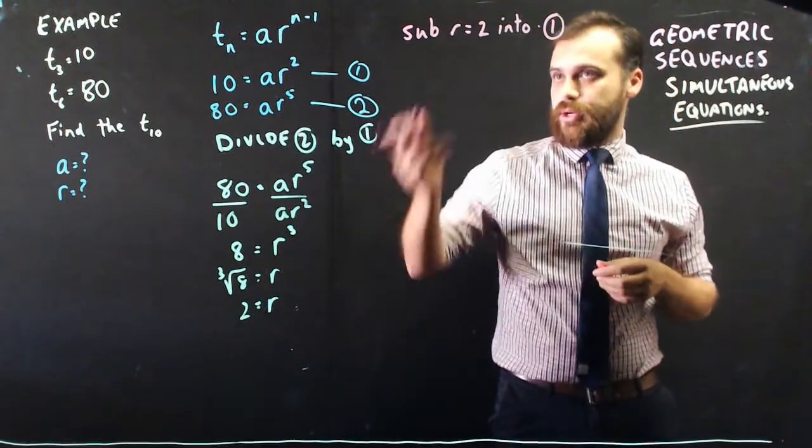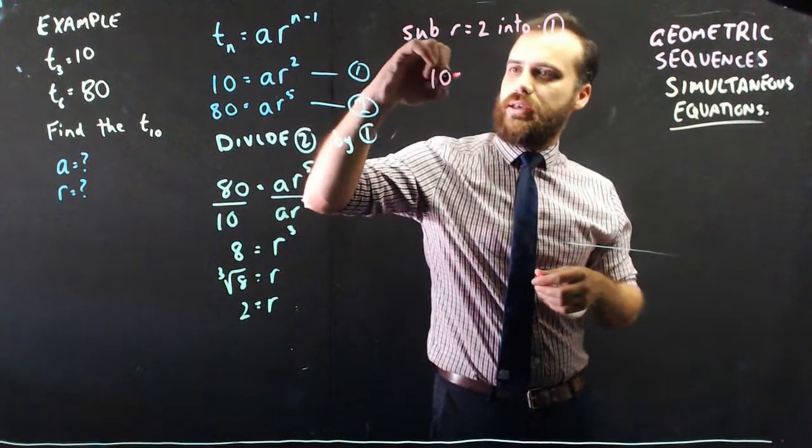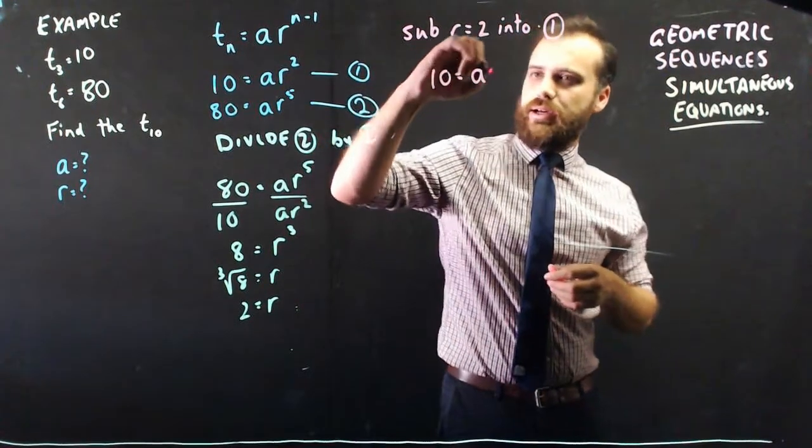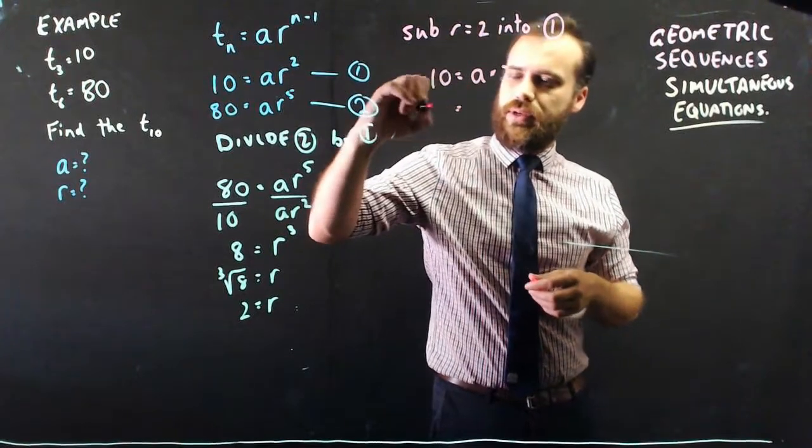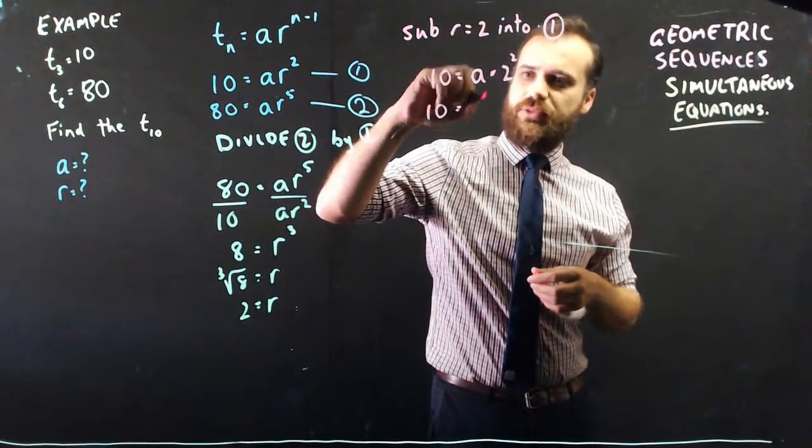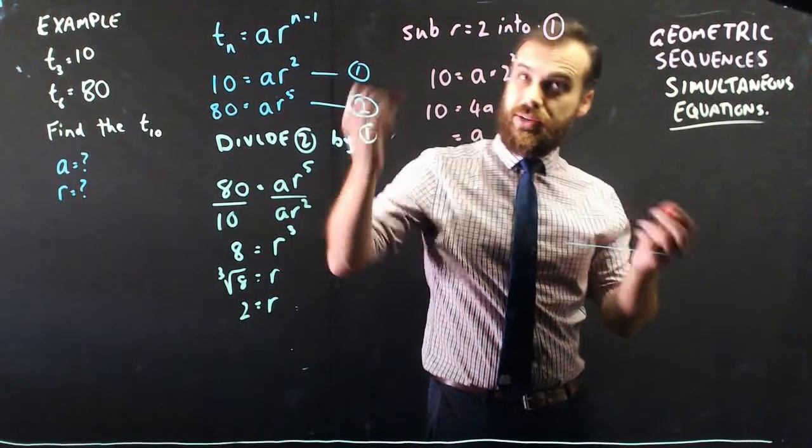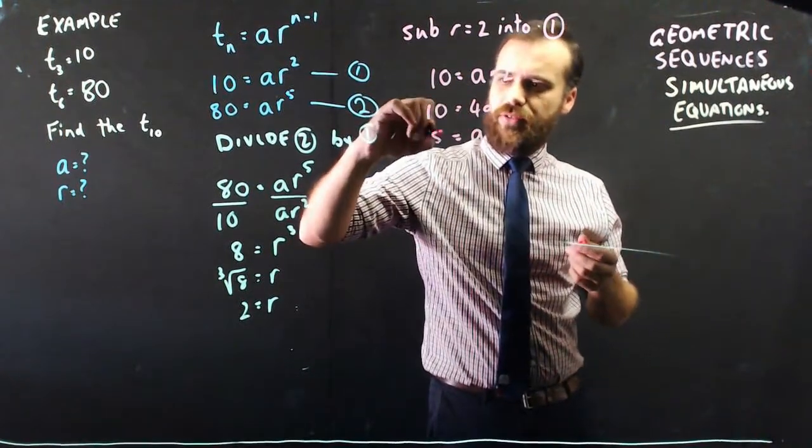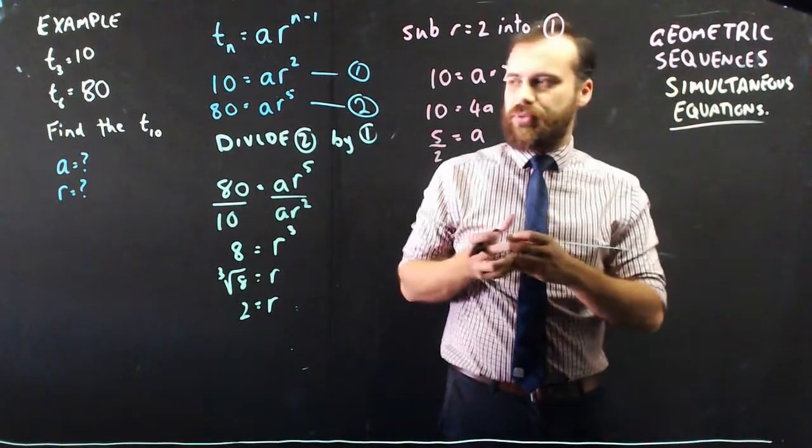Now that I know r equals 2, I can sub r equals 2 into equation 1. So 10 equals a times 2 to the power of 2. So 10 equals a times 4, or 4a. Which means that a equals 10 on 4, which is 5 on 2, or 2.5, whatever you feel comfortable dealing with.